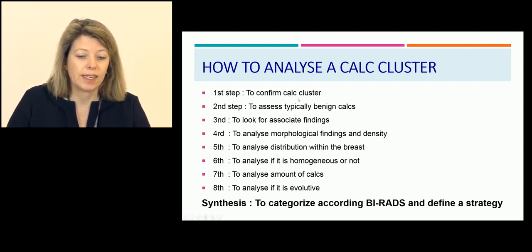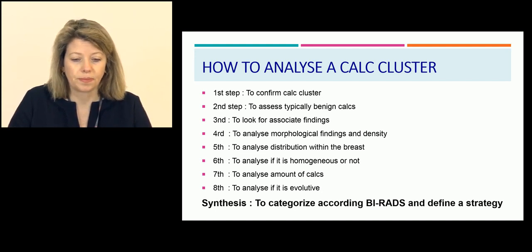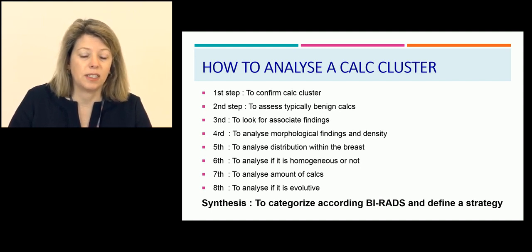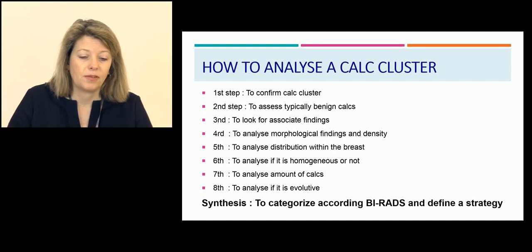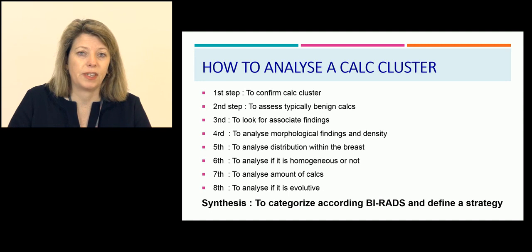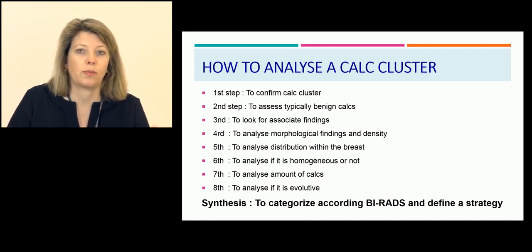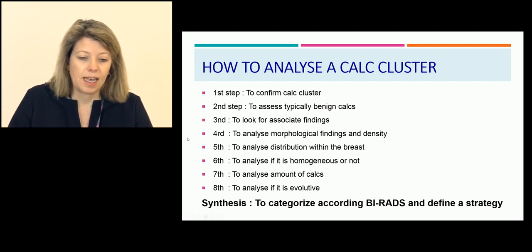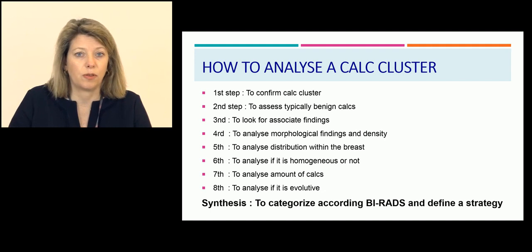How to analyze a calcification cluster: Step 1 — confirm these are real calcifications and not artifacts. Step 2 — assess whether this is a typically benign calcification or not. Step 3 — look for associated findings such as mass, distortions, retraction. Step 4 — analyze morphological findings and density. Step 5 — analyze distribution within the breast. Step 6 — analyze if it's homogeneous or not. Step 7 — analyze the amount of calcifications in one cluster. Step 8 — analyze if it's evolutive or not, comparing with previous mammography. Finally, synthesize and provide a BI-RADS category and define a strategy: biopsy, follow-up, or nothing.